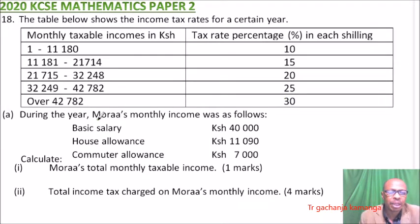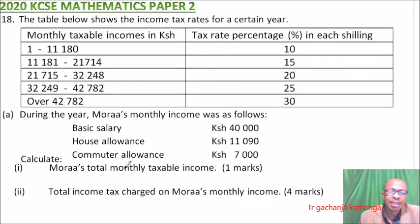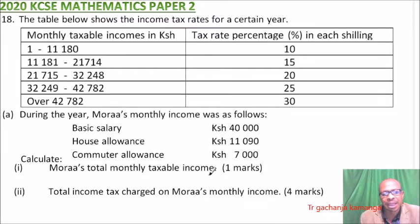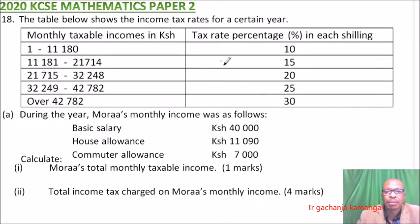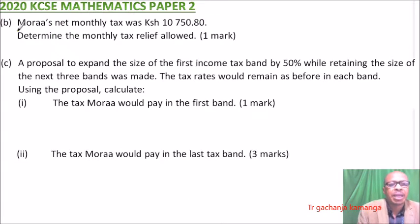During the year, Morales' monthly income was as follows: basic salary of 40,000, house allowance of 11,090, and commuter allowance of 7,000. Part A asks for Morales' total monthly taxable income. Part B asks for the total income tax charged on Morales' monthly income. I've divided this question into two parts.